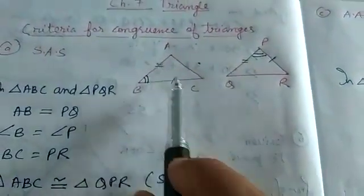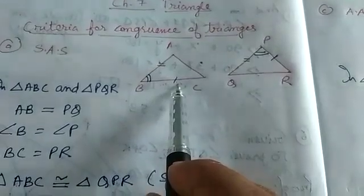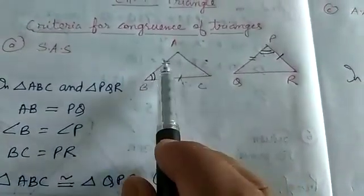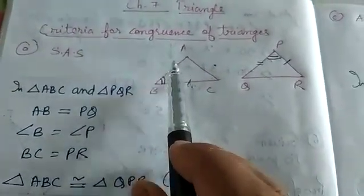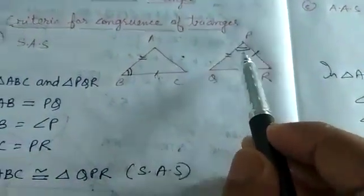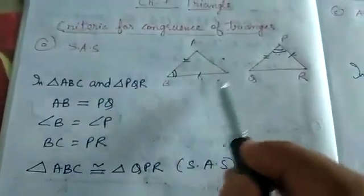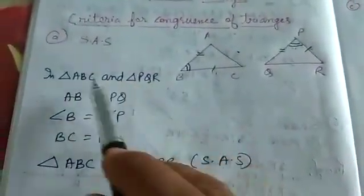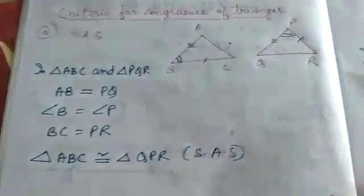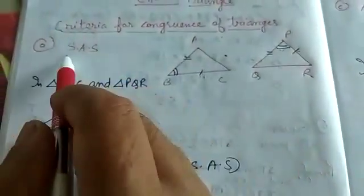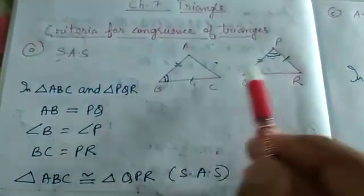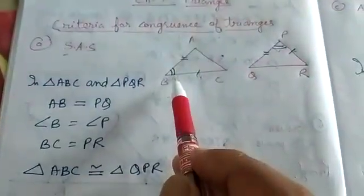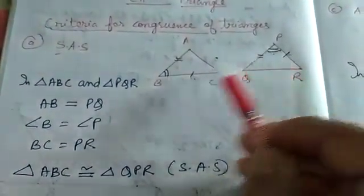In a triangle, when two sides and the angle between them is given, that is SAS. For example, in this triangle I have marked two sides and the angle between them — not the other angles. So AB equals PQ (double marking), angle B equals angle P, and BC equals QR (single marking).